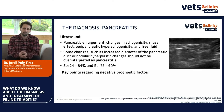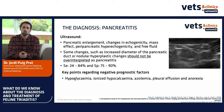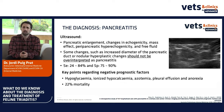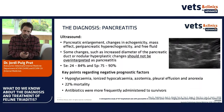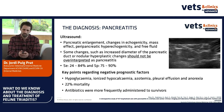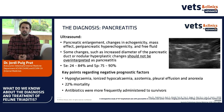Regarding negative prognostic factors shown in a recent paper: hypoglycemia, ionized hypocalcemia, azotemia, pleural effusion, and anorexia are all negative prognostic factors. The last study with 157 cats showed a 22% mortality rate, which is quite high compared to humans. What they found is that antibiotics were more frequently administered to survivors — and remember, bacteria was present more in cats with high severity of pancreatitis. We'll discuss this further in the treatment section.